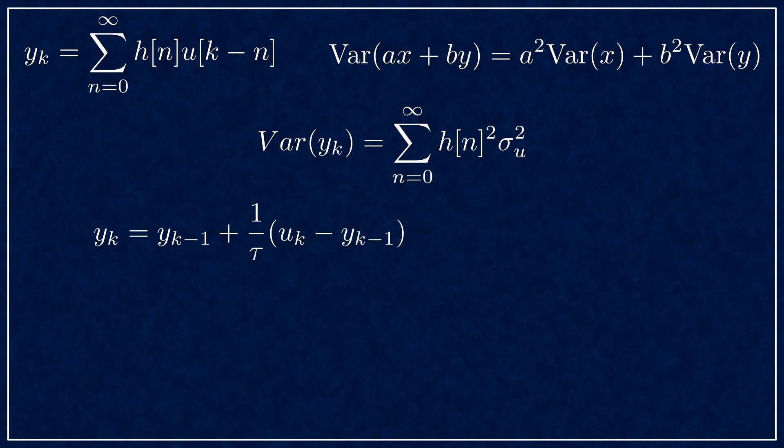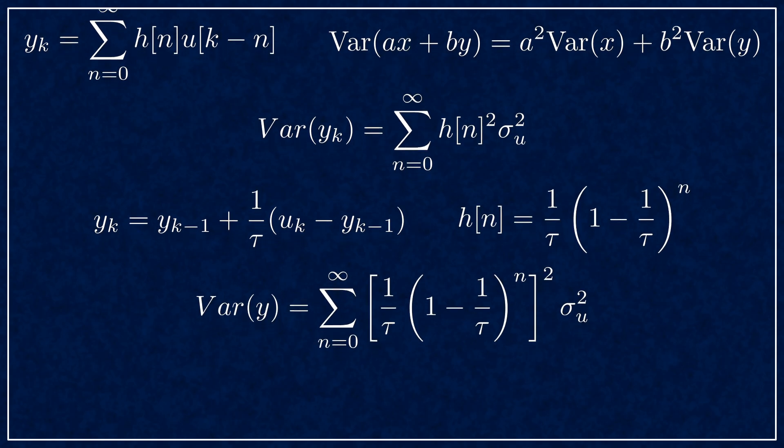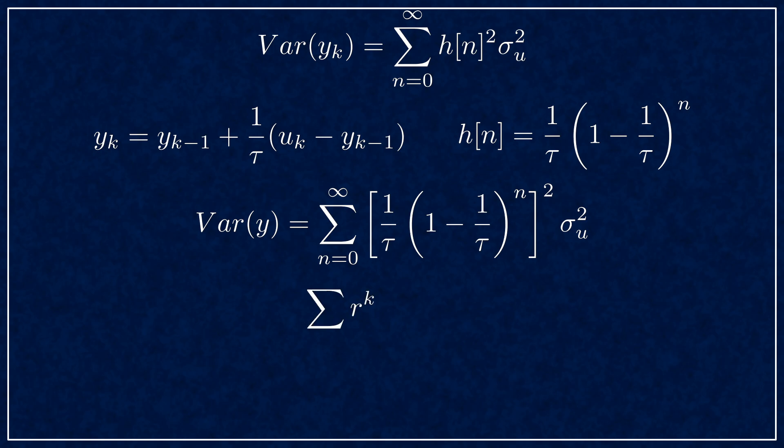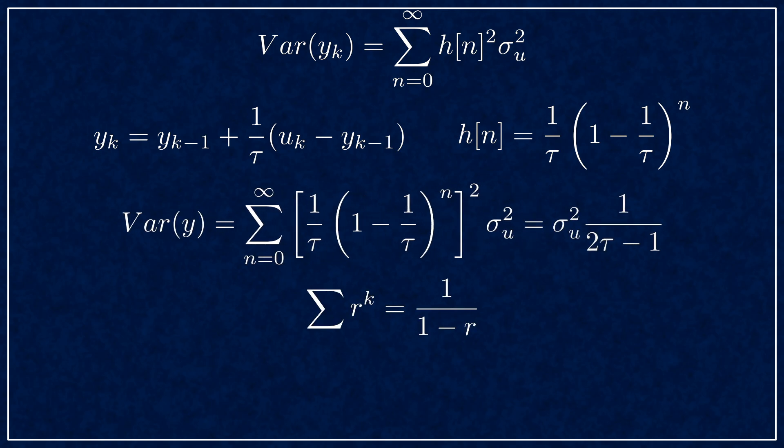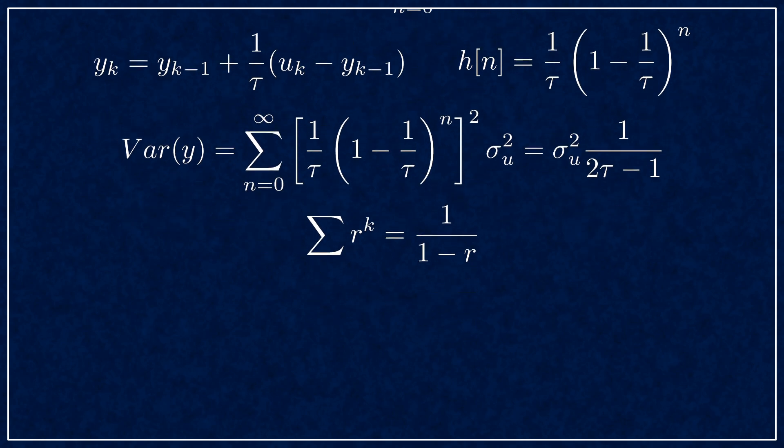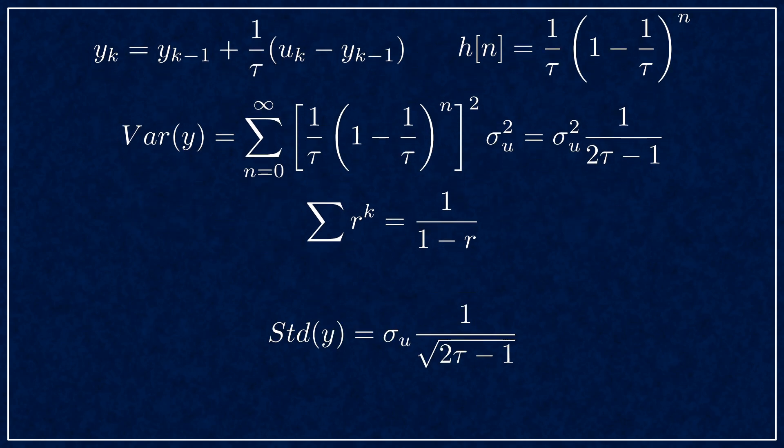The variance of the input U is just sigma U squared for all n. Here's a reminder of the definition of the EMA filter, and here's the impulse response. You plug it all in, and using the formula for the sum of geometric series, you can reduce the expression to sigma U squared times 1 over 2 tau minus 1. Then the standard deviation is the root of that. So sigma U times 1 over root of 2 tau minus 1.